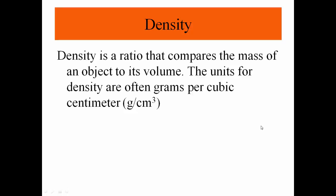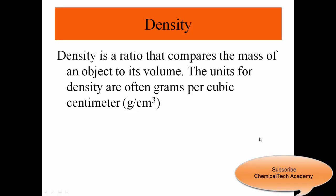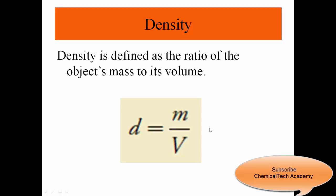The units for density are often grams per cubic centimeter. Usually density is shown by lowercase d, or sometimes shown by rho, the Greek letter. M is the mass and capital V shows the volume.